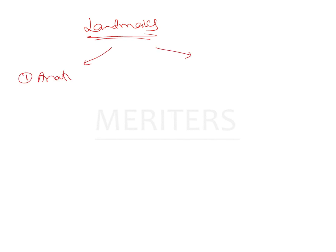They can be anatomical landmarks — representations of actual anatomical structures on the radiograph. For example, the nasion, the posterior nasal spine, the anterior nasal spine, etc.